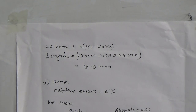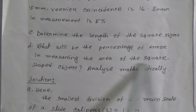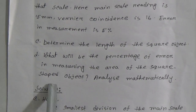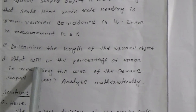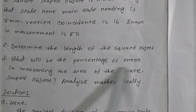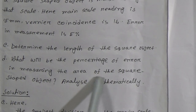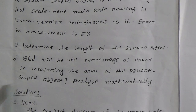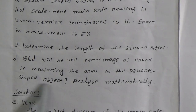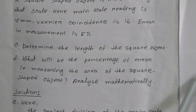Now we go to question D: what will be the percentage of error in measuring the area of the square shaped object? Analyze mathematically. The key term here is square shaped object.